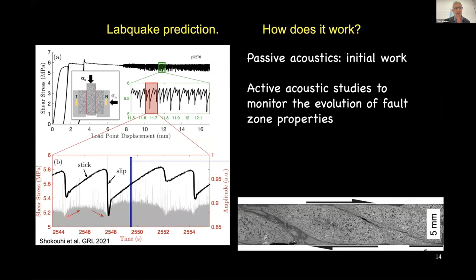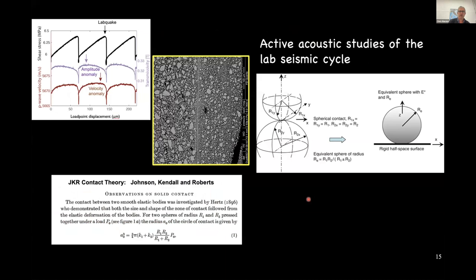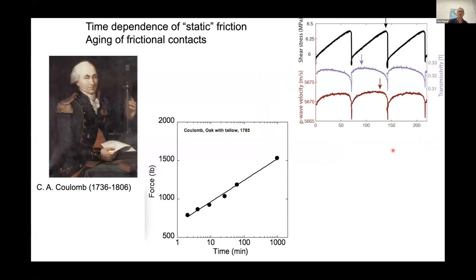Looking at the active source data, I want you to see the laboratory seismic cycles and the amplitude of waves transmitted through the laboratory fault zone. The active source information gives you real hardcore information about the fault zone contact states. Thinking about contact junctions in a frictional problem — every one of these junctions can be approximated like a Hertz contact and thought of in terms of JKR contact theory. This means that data on transmitted amplitude and velocity gives us direct information about the contact geometry and how it's changing during the seismic cycle.